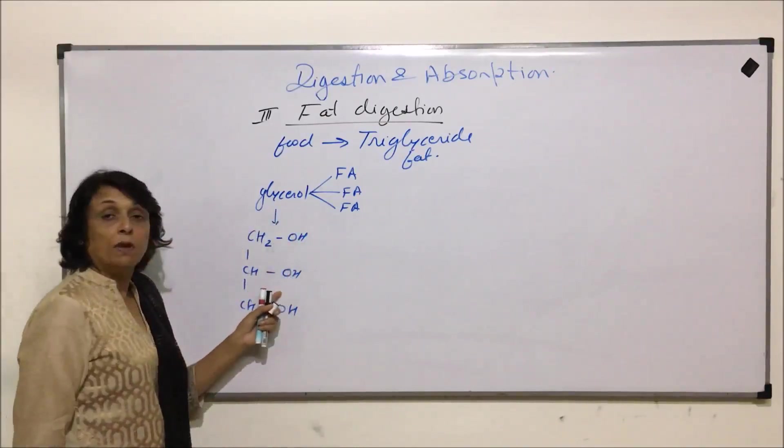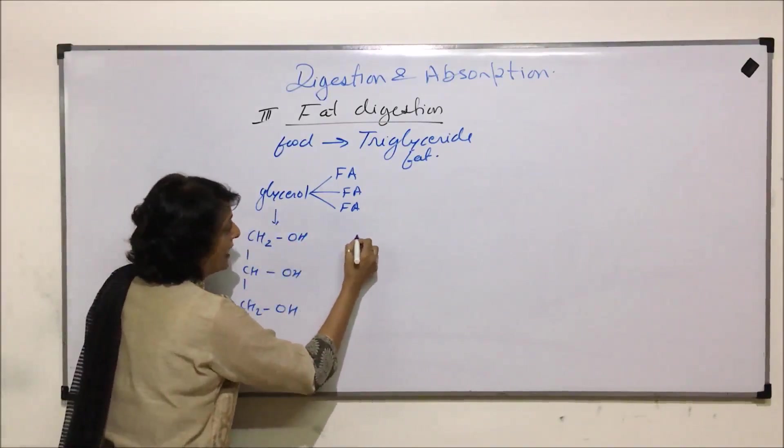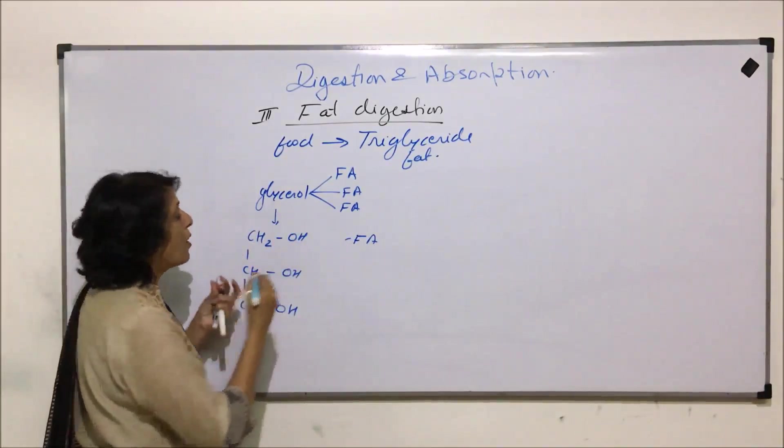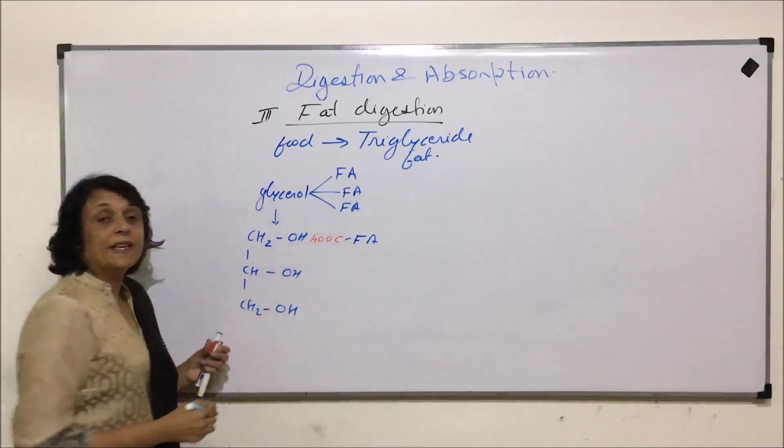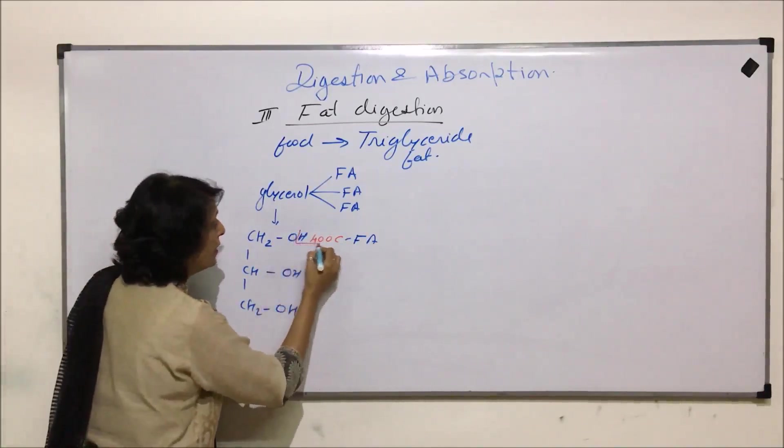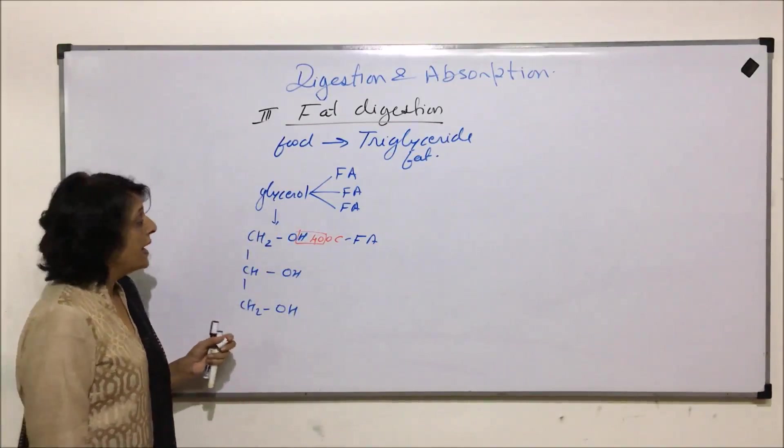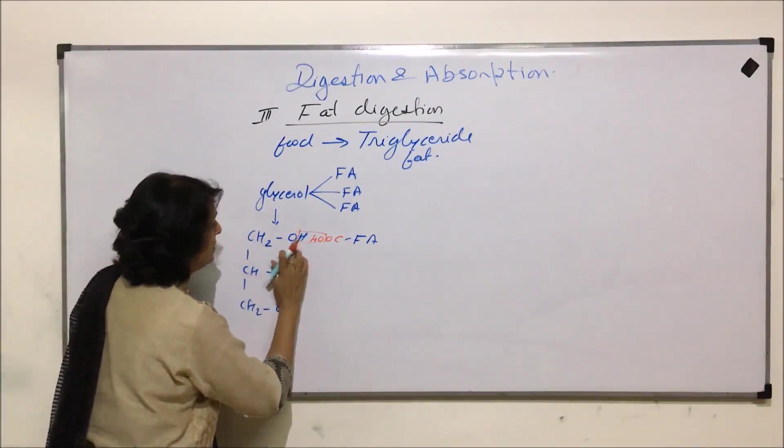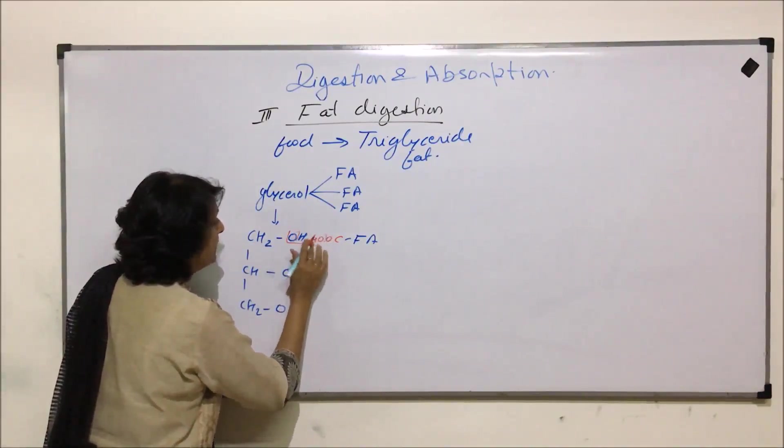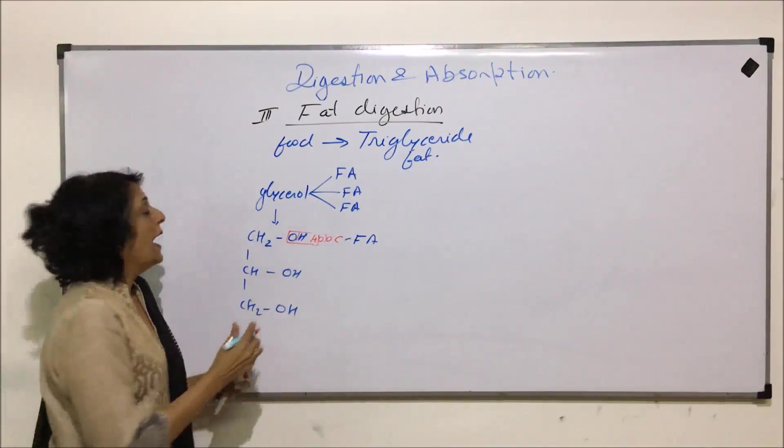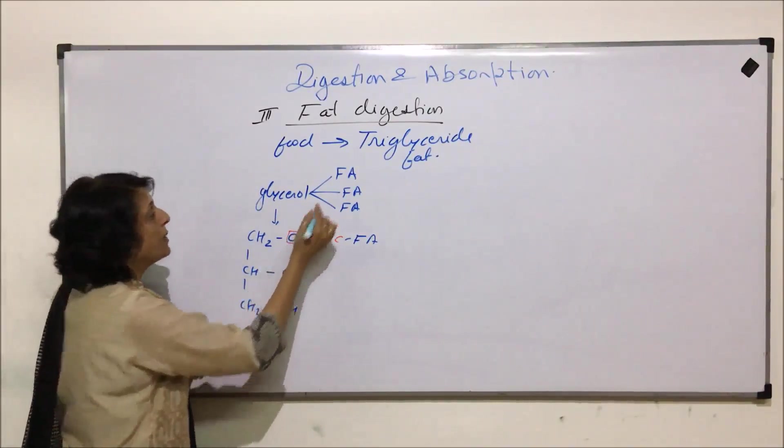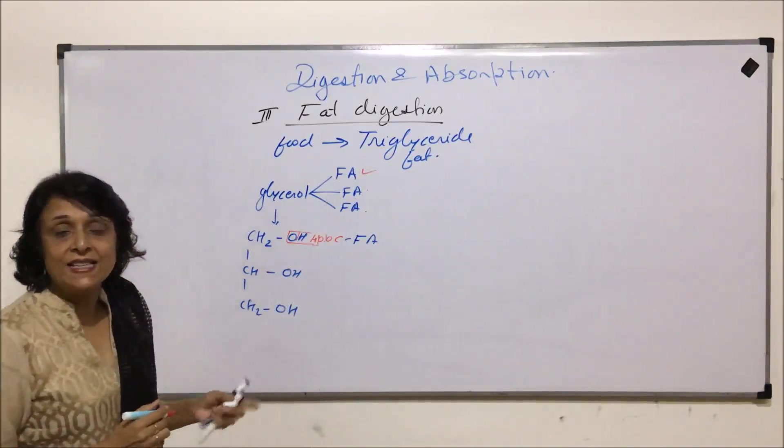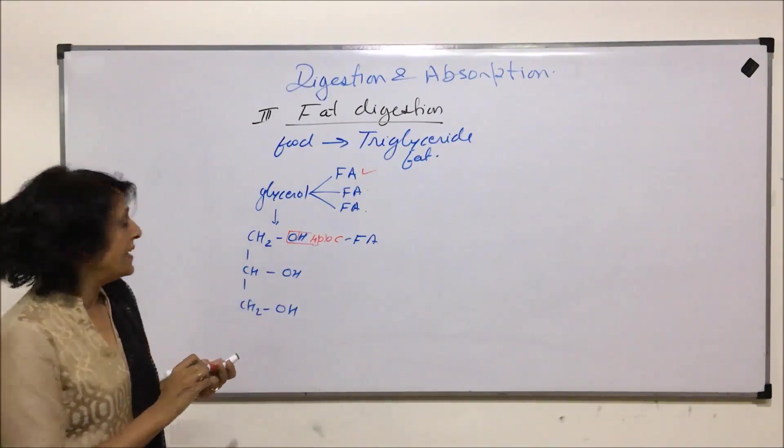Glycerol has three functional groups. A fatty acid has at least one carboxyl group. With elimination of water, a bond is formed, and that bond is known as the ester bond. With this ester bond formation, either one, two, or three fatty acids would get attached.